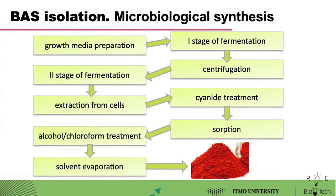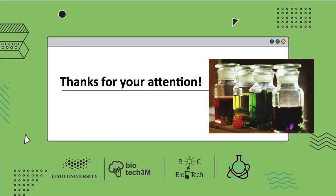Finally, it is worth mentioning another way of isolating biologically active substances — microbiological synthesis. Vitamin B12 is obtained by microbiological synthesis from Propionibacteria. Bacteria are cultured in a batch method under anaerobic conditions in a medium containing corn extract, glucose, cobalt salts and ammonium sulfate. On the slide you can see the stages of vitamin B12 synthesis. The resulting vitamin is a red crystalline substance. This section is now complete — thanks for your attention.